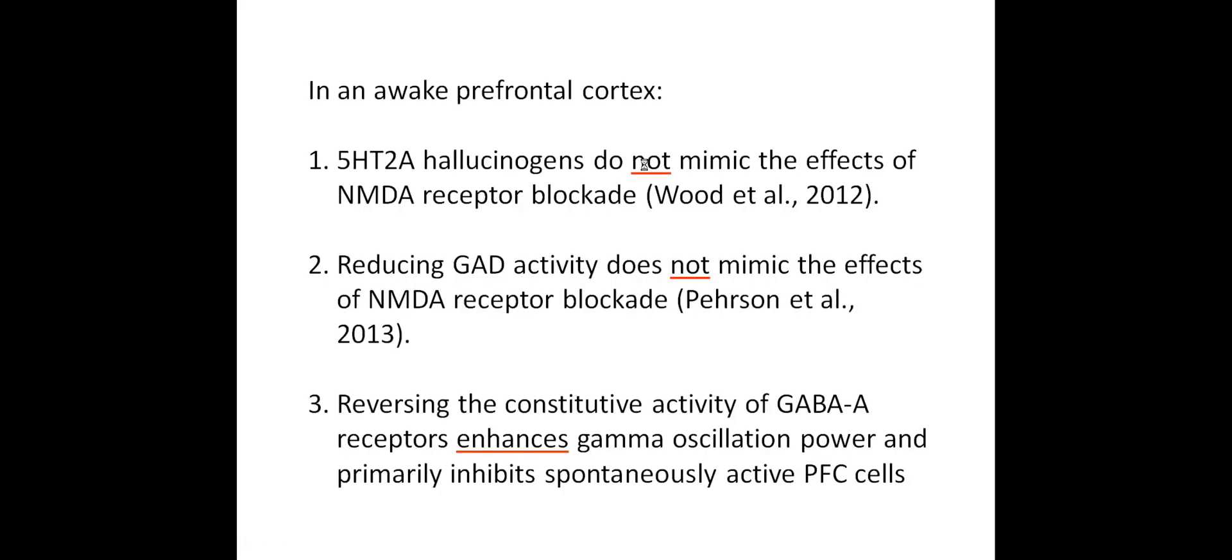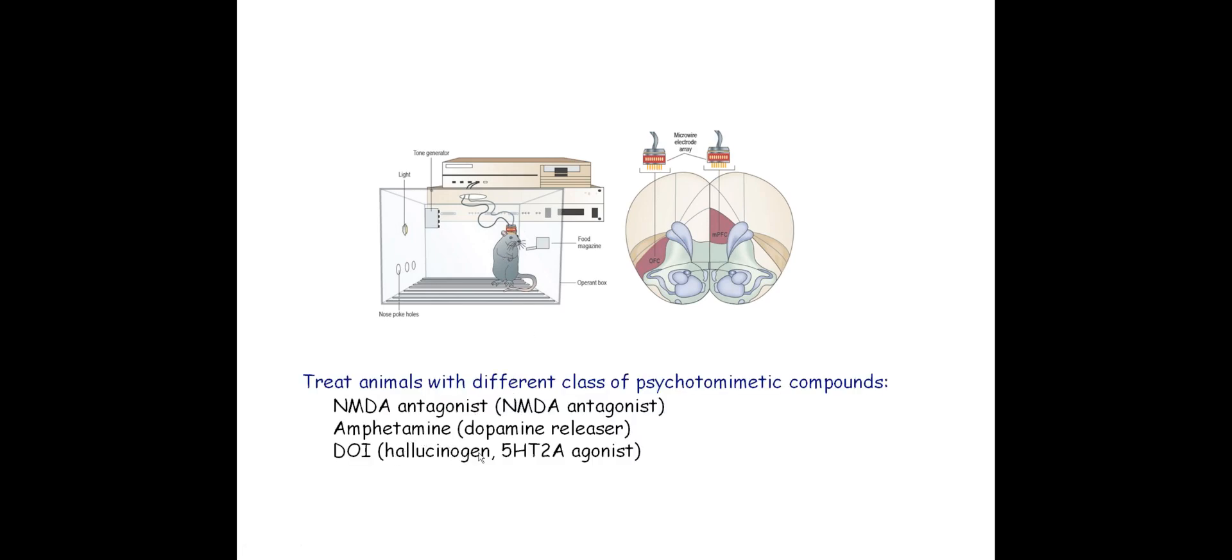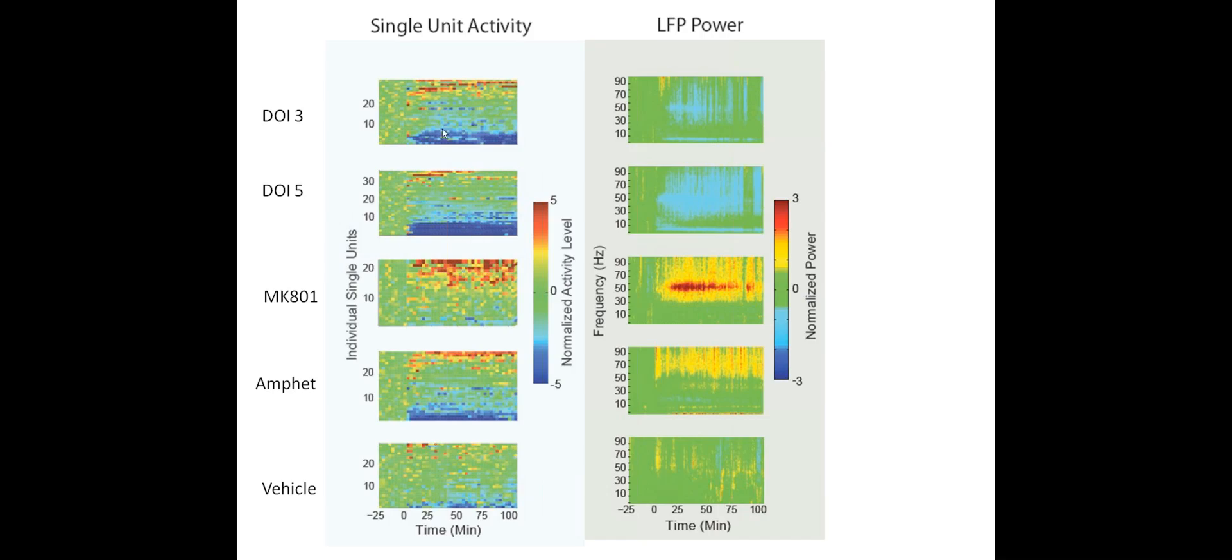The nice thing about this model was that it has very predictable functional endophenotypes in that there is reduced GABA interneuron activity, increased pyramidal cell activity, and reduced gamma oscillation. Recently we've been trying to essentially test these other mechanisms in awake freely moving animals. What we find is that in fact 5-HT2 hallucinogens do not mimic the effect of NMDA receptor blockade. Reducing GAD activity does not mimic the effect of NMDA receptor blockade. Also, recording the activity of GABA receptors enhances and not inhibits gamma oscillation. Let me just briefly mention this.